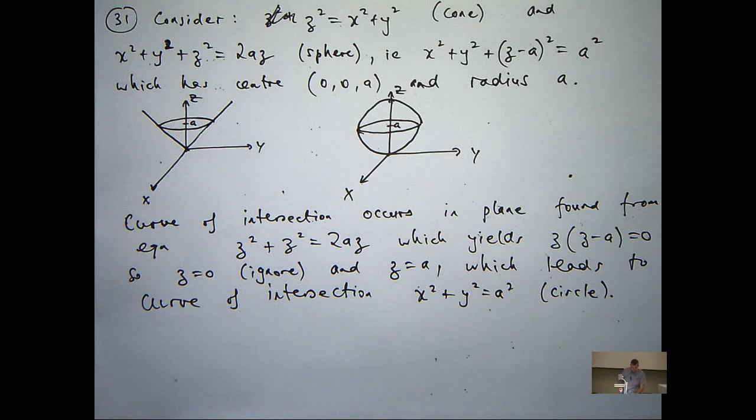All right, so who can tell me what do you think the actual set of points will look like? The solid that lies above the cone but below the sphere. What will it look like? How could you describe it in words? Does it remind you of anything familiar?